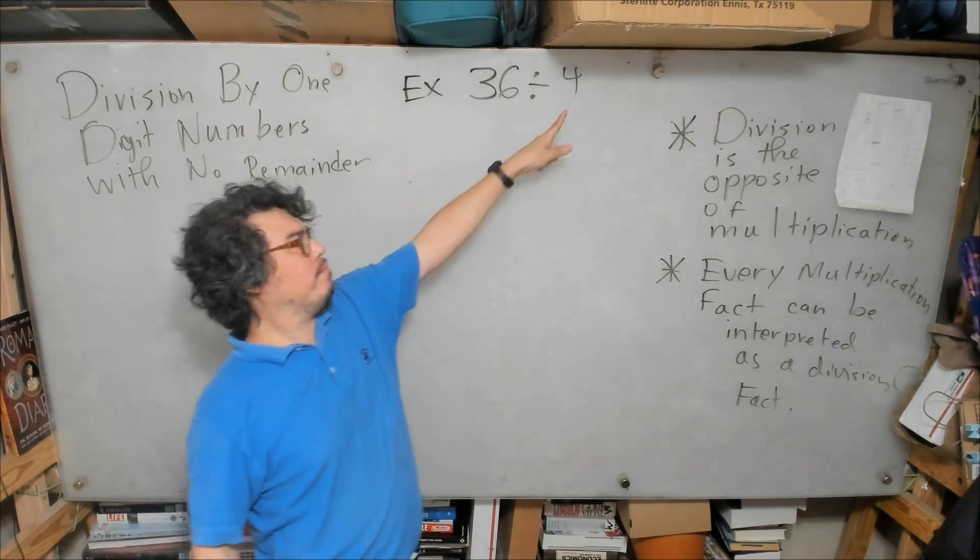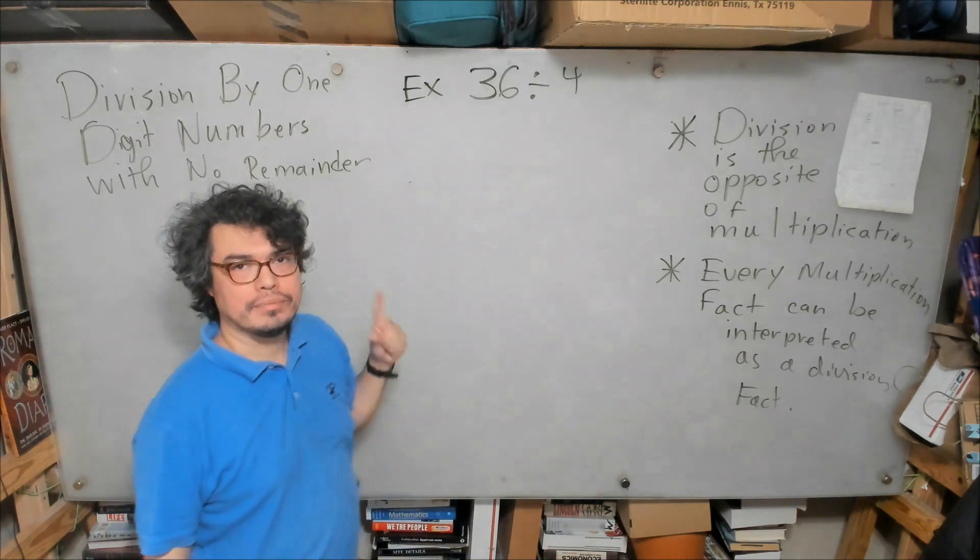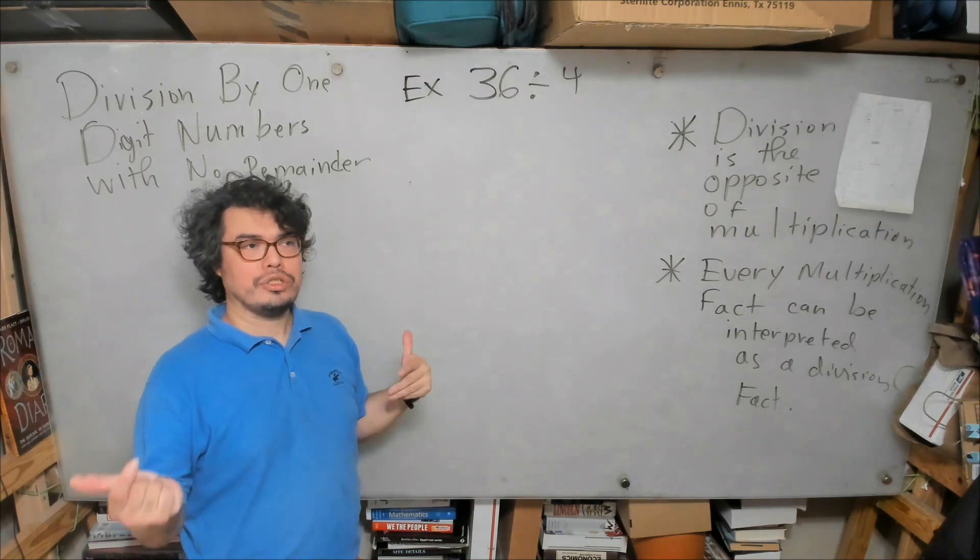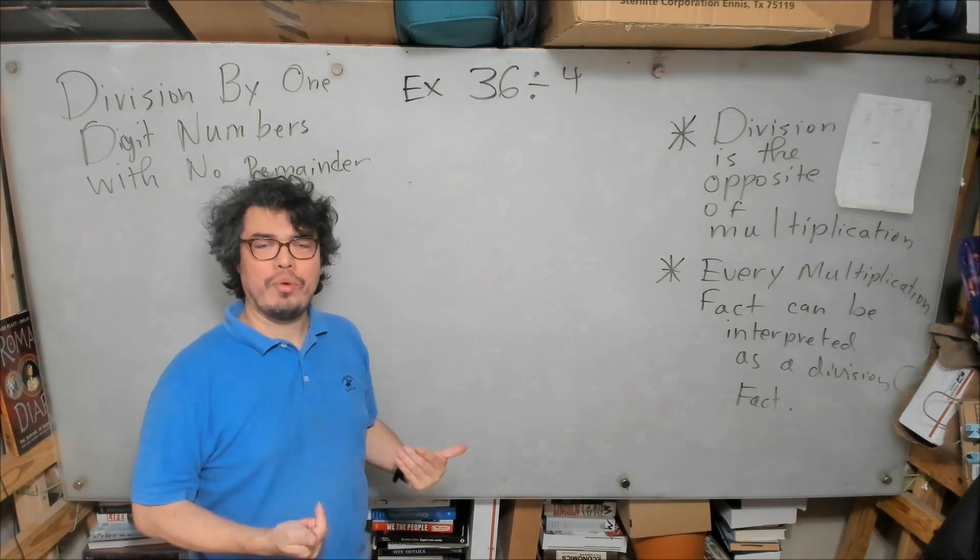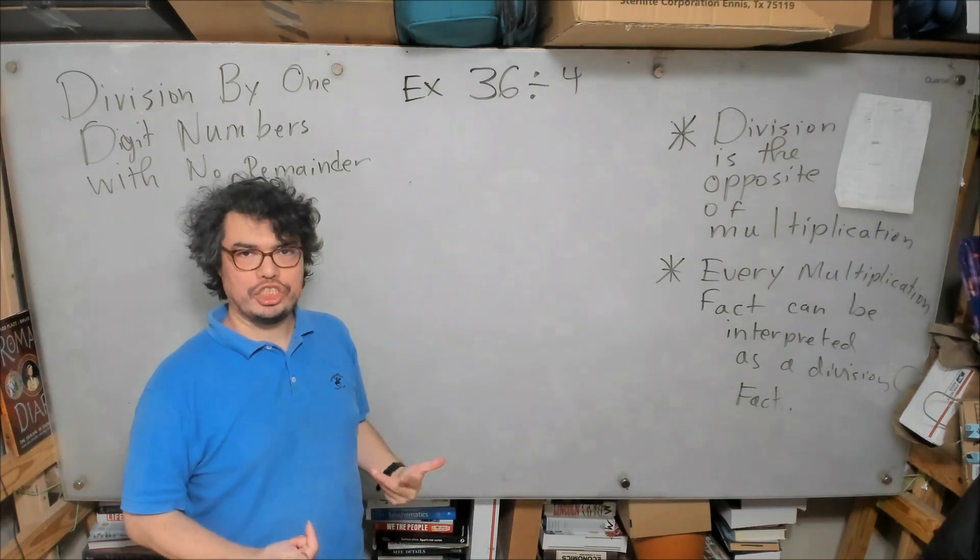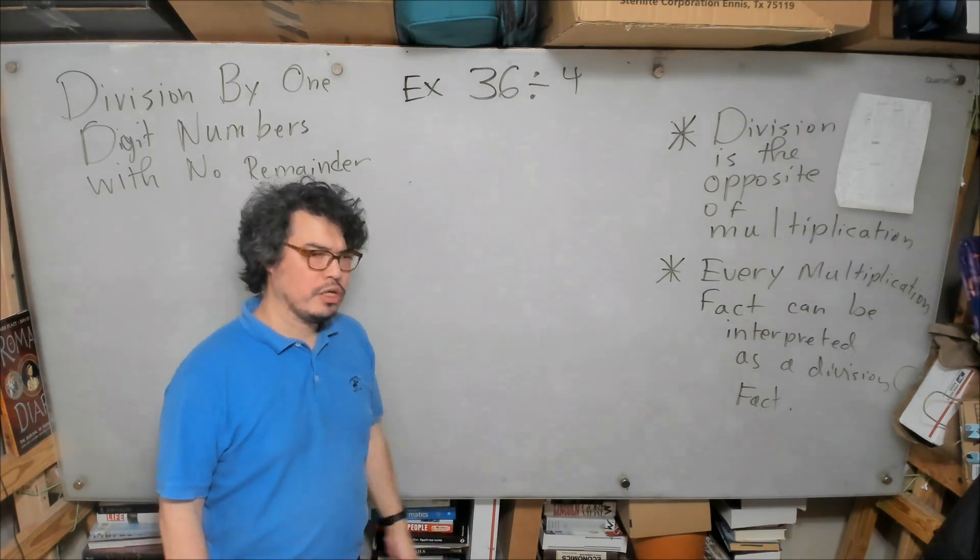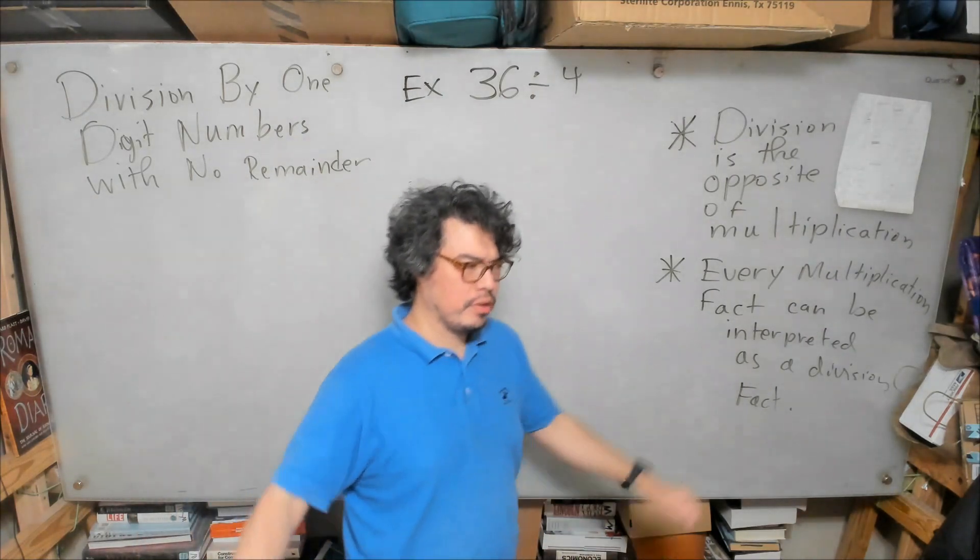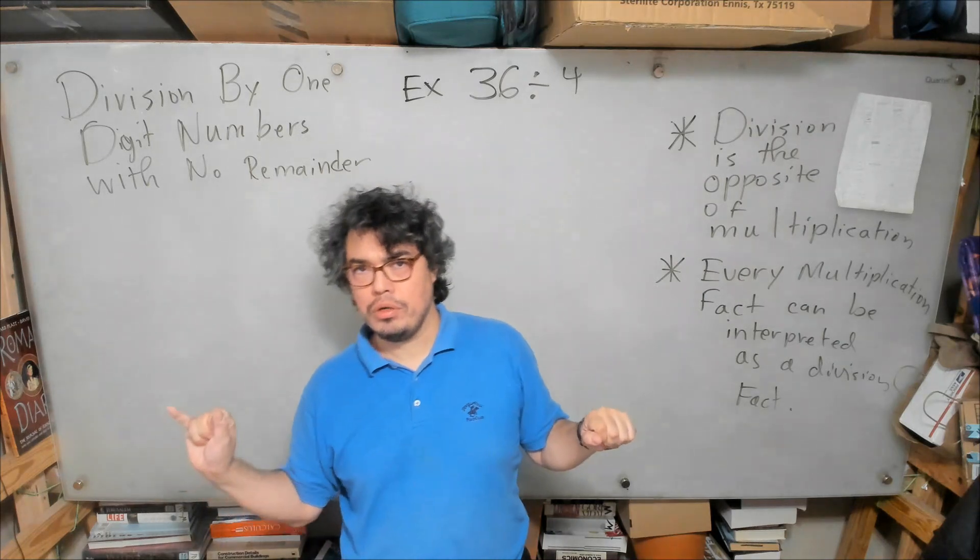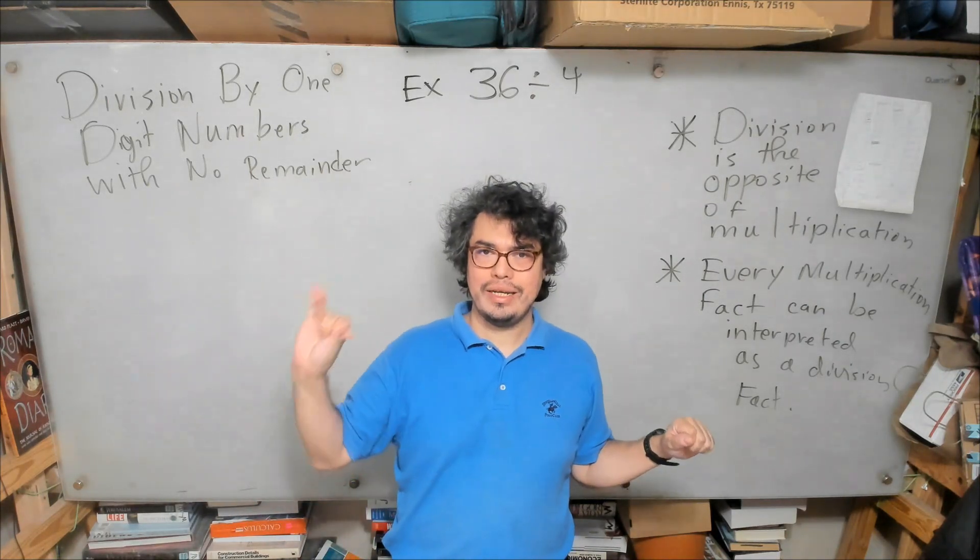We can look at 36 divided by 4 and interpret in our brains: what number times 4 will give me 36? Okay, so for this we would need to figure out the multiplication table for 4. Okay, so let's count it out together. 4 times 1 is 4, 4 times 2 is 8.